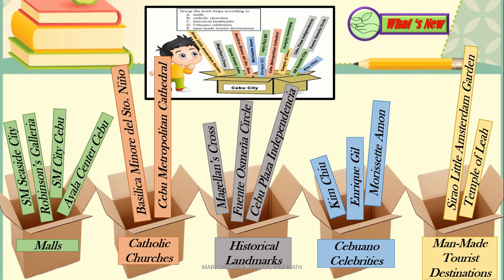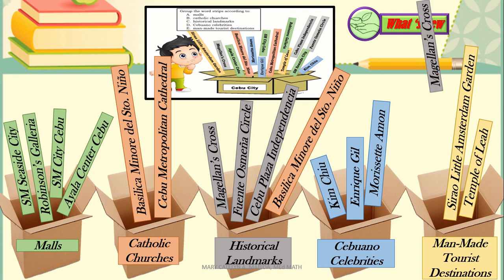However, some objects may belong to two or three or more groups. For example, Basilica Minore del Santo Niño, aside from being a Catholic Church, is also a historical landmark. And Magellan's Cross, aside from being a historical landmark, is also a man-made tourist destination. Nevertheless, each of the boxes is a collection of well-defined distinct objects called sets.